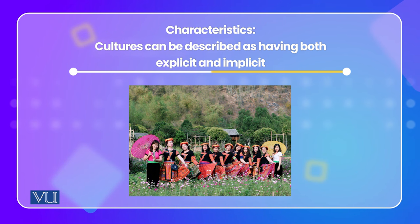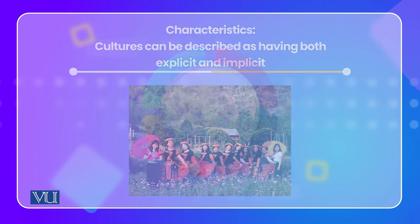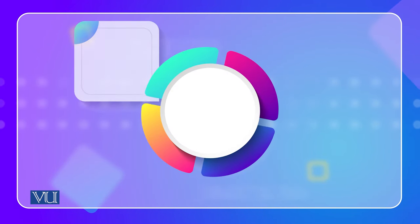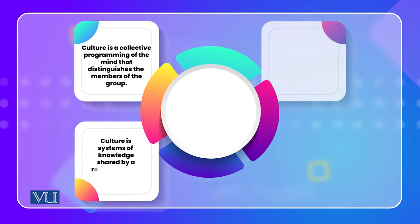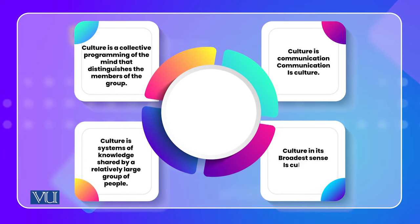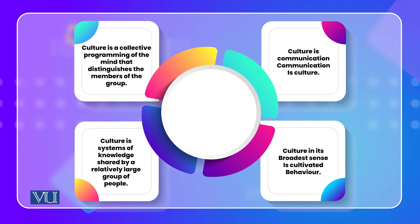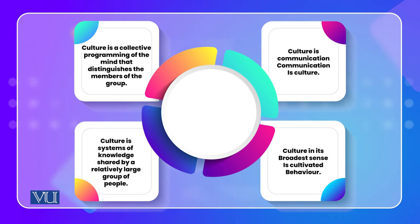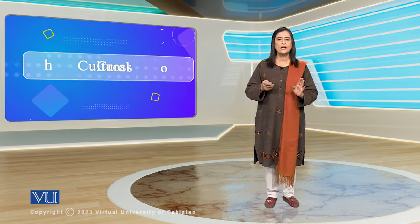The characteristics of culture can be hidden or explicit — so both implicit and explicit. Culture is both a mindset, a kind of programming of the mind, and also a behavior. It is also a system of knowledge: we learn what people do in our culture, and growing up in a culture, we become what our culture has given us. But we also learn from other cultures, so culture is communication and communication is culture.